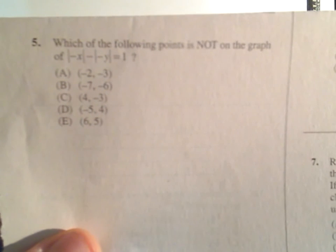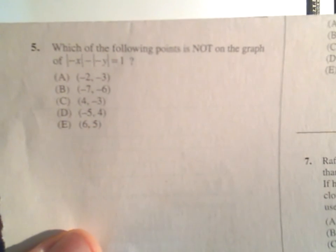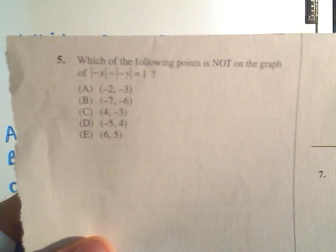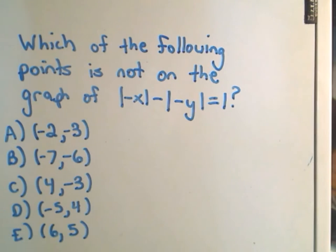Okay, so this is another SAT question taken from the Princeton Review. It says, which of the following points is not on the graph of absolute value of negative x minus the absolute value of negative y equals 1? And then they give you a bunch of points.